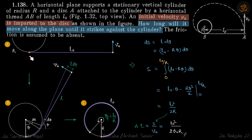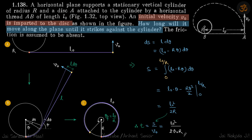We have a thread that is tied to a point on a cylinder, and the other end is given a velocity v0. It will start wrapping around this cylinder. We need to find how long it will take to move along the plane until it strikes the cylinder again — so it starts here and ends here when it is completely wrapped.